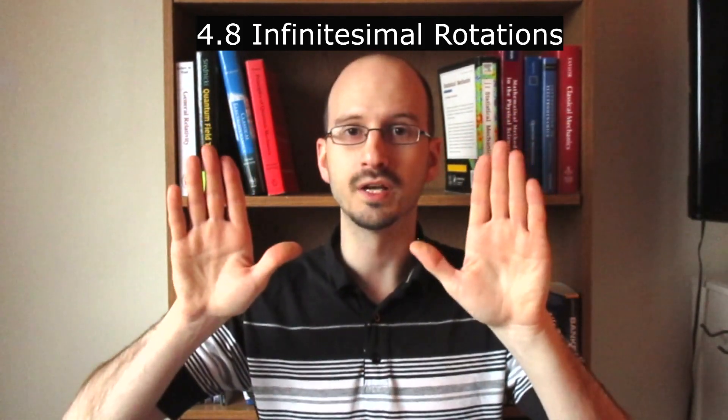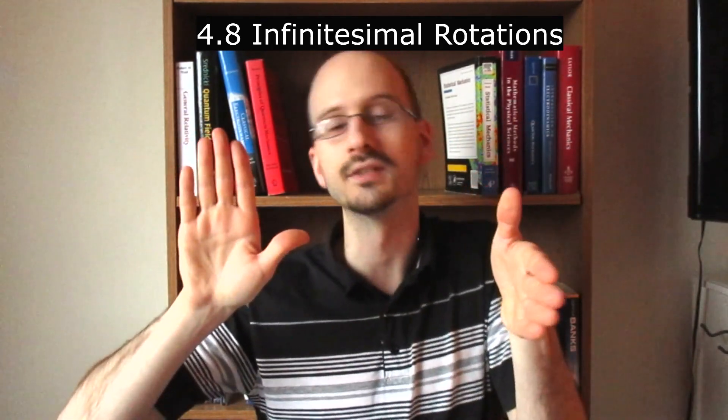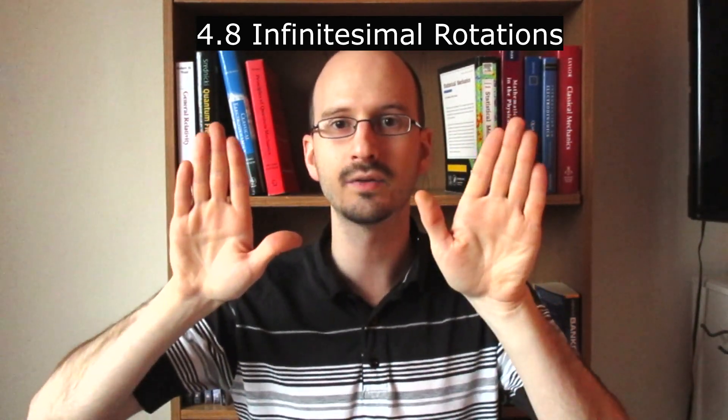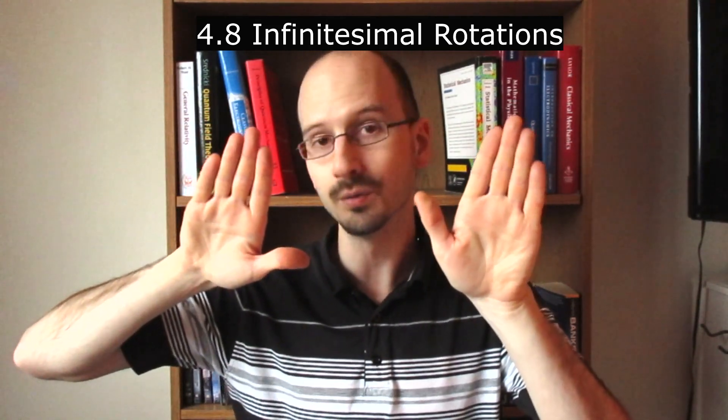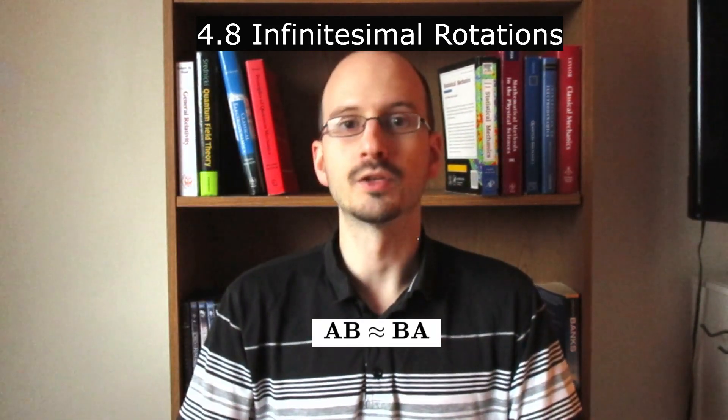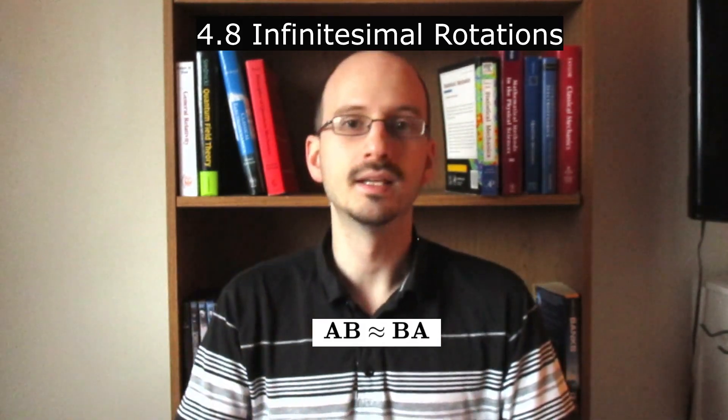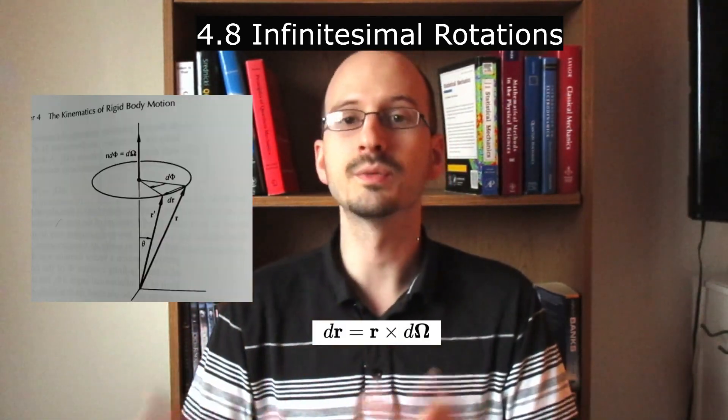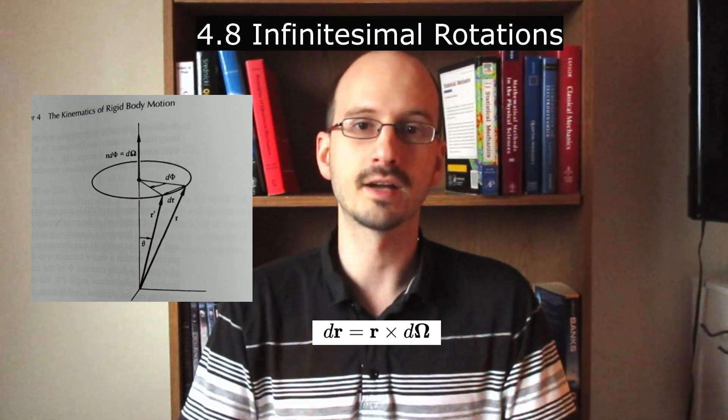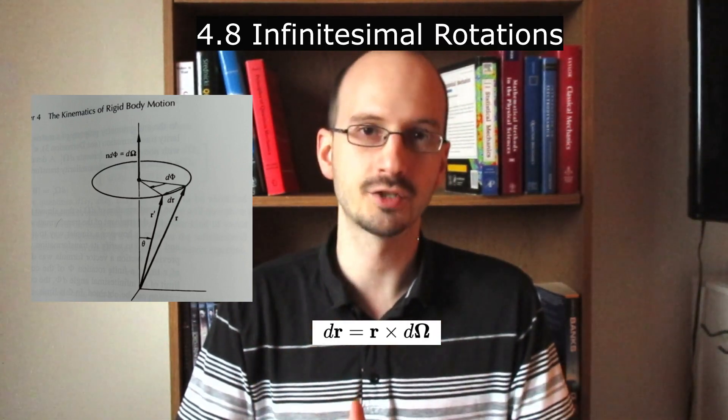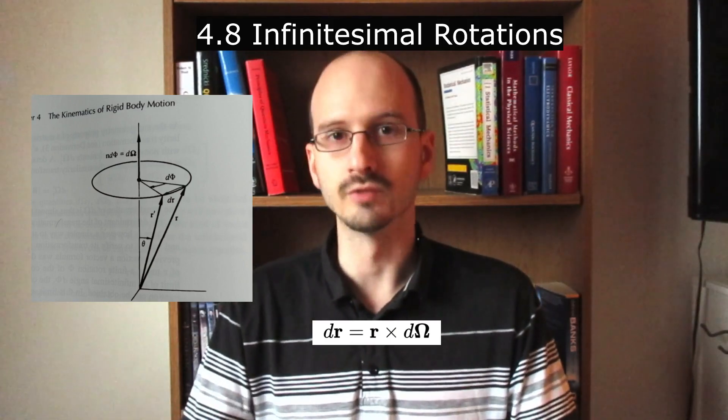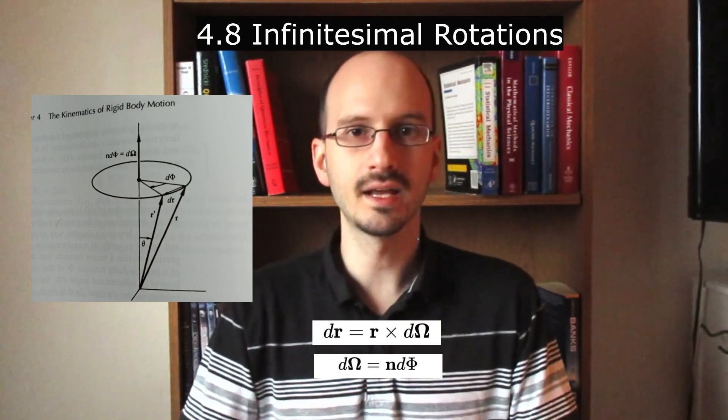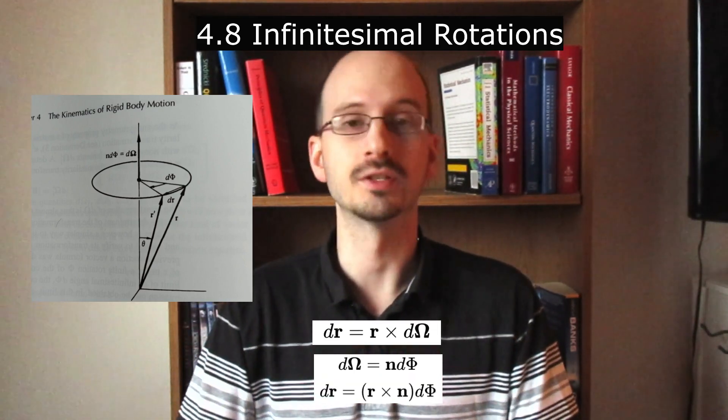Unlike large rotations, where, for instance, left down is different from down left, infinitesimal rotations might give us a left down and a down left that are almost exactly the same. So we can approximate that the transformation AB is equal to the transformation BA. When rotating a vector, the infinitesimal change in the vector is equal to the vector cross product, the infinitesimal rotation. Vectors that transform this way are called polar vectors. The infinitesimal rotation is equal to n times d angle, which means the infinitesimal vector change is equal to this.